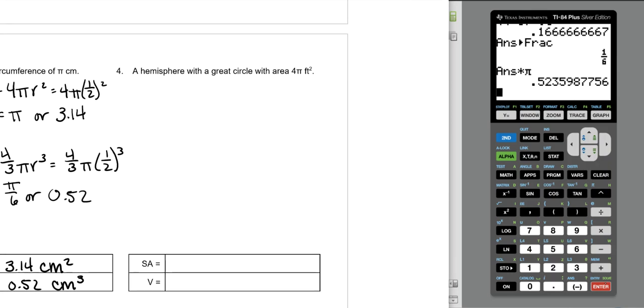Lastly, there is a hemisphere with a great circle of an area of 4π. We still need to know our radius. The area of a circle is πr². It tells us the area is 4π. We need to divide by π. So the π's cancel. 4 equals r². Take the square root. Our radius is 2.